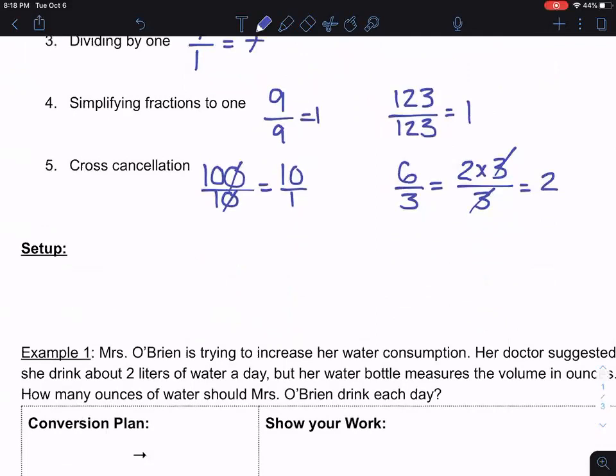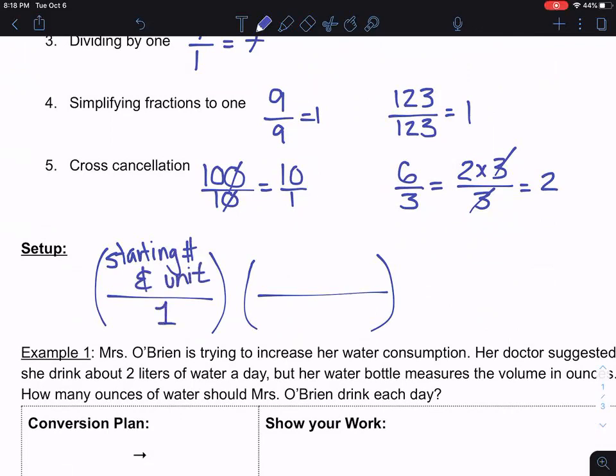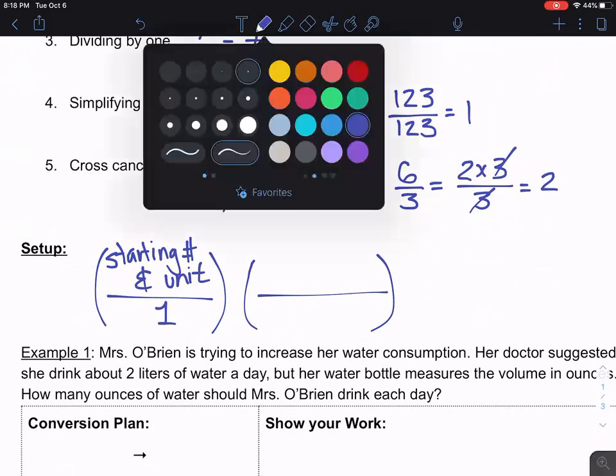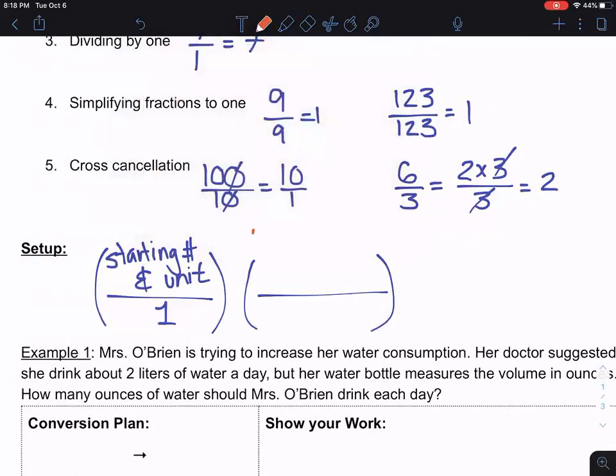Okay, our general setup for unit conversions is that we're always going to make two fractions multiplied together. At the top of the first fraction, we're going to give our starting number and unit, whatever the problem gives us. And I always put that over 1. It's the same thing as just writing the starting number and unit, but it helps me keep things lined up and prevents me from making some mistakes.